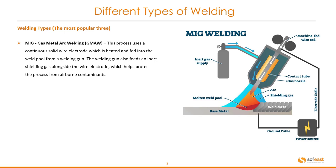You can see a very good cross-sectional diagram on the right here. We can clearly see the machine-fed wire rod coming through the welding gun. We've got the inert gas supply. We can also see the molten weld pool against the base metal and the different elements of the weld itself.